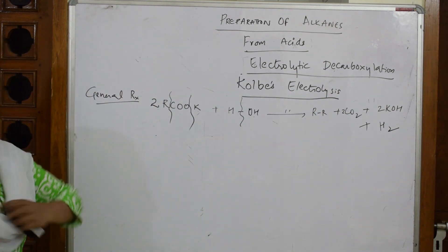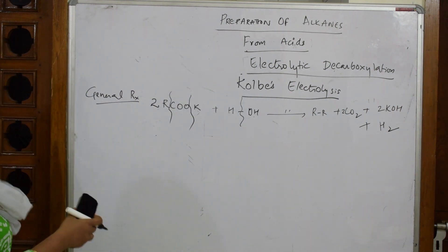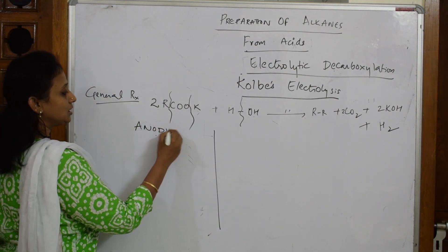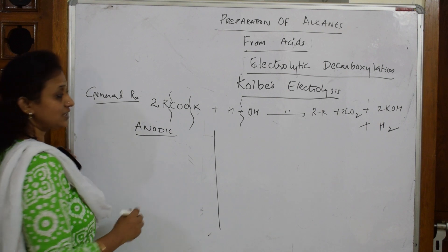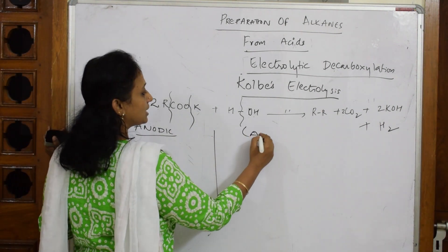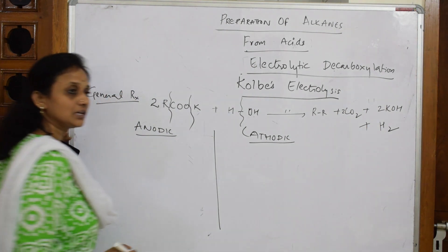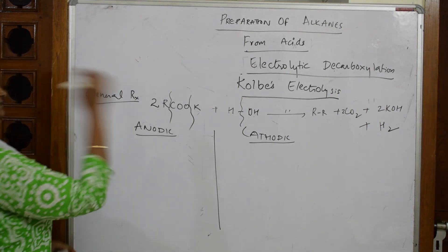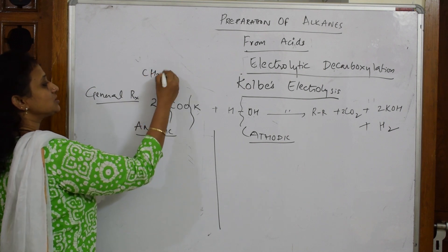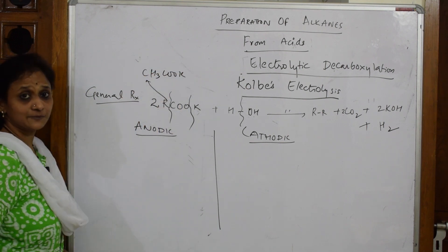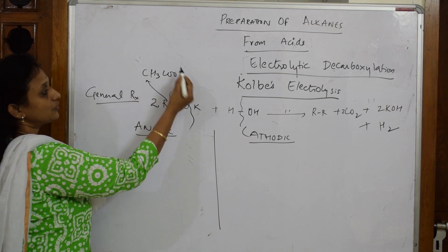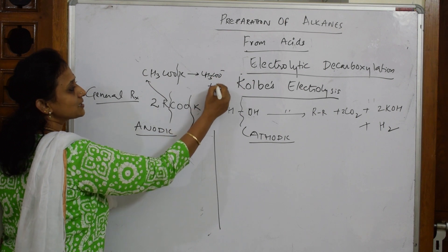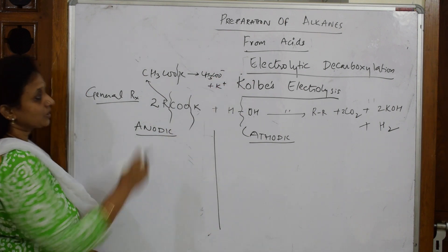Now let us see what actually happens inside the electrolytic cell. We have two electrodes: the anodic electrode where oxidation always happens, and the cathodic electrode where reduction happens. Taking CH₃COO⁻K⁺ as our example, it dissociates into CH₃COO⁻ plus K⁺.